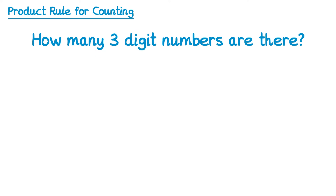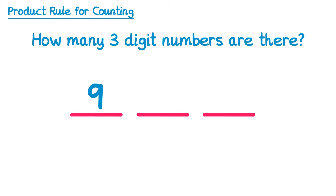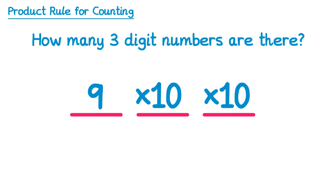How many three-digit numbers are there? I like to draw a line to represent each digit — so for a three-digit number I'll draw three lines. For a three-digit number the first digit must be 1 through 9; it obviously can't be zero or it would actually be a two-digit number, so there are nine ways of selecting the first digit. For the second digit it could be any number from 0 to 9, that's 10 numbers, and exactly the same for the last digit. So 9 times 10 times 10 means there are 900 possible three-digit numbers.